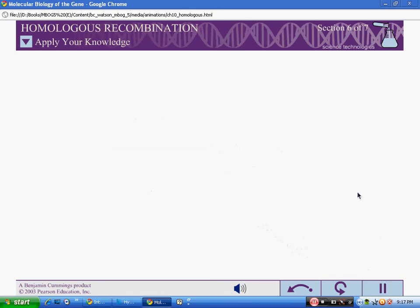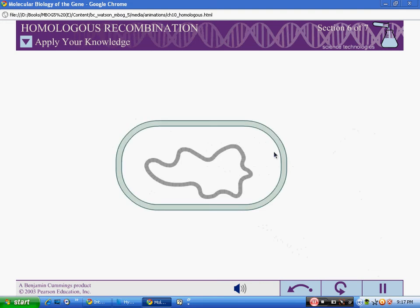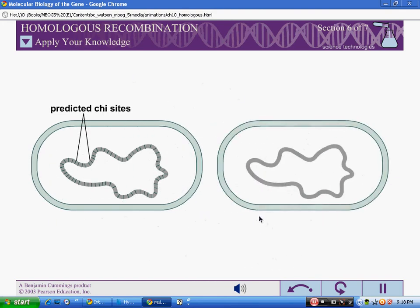The 8-nucleotide chi-site is highly over-represented in the E. coli genome. While a given 8-nucleotide sequence should appear about 80 times in the E. coli genome, the chromosomal sequence reveals 1009 chi-sites. However, DNA from another species will lack such frequent chi-sites.